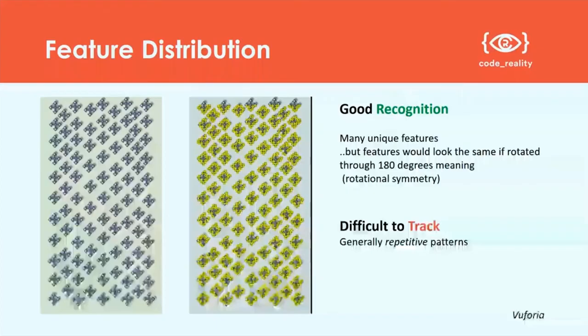This is the challenge between trackability and recognition. A repeating pattern has lots of uniquely identifiable, recognisable points, so it's quick to be recognised and the model will appear on top straight away. Unfortunately, if you focused on the middle section and moved the whole thing up, down, left, or right, the camera wouldn't detect that shift. Although it recognised it, it wouldn't be able to track or synchronise the object. So repeating patterns tend not to be good for trackability. Even though it has all those unique features, if it was rotated or translated it would look more or less the same.